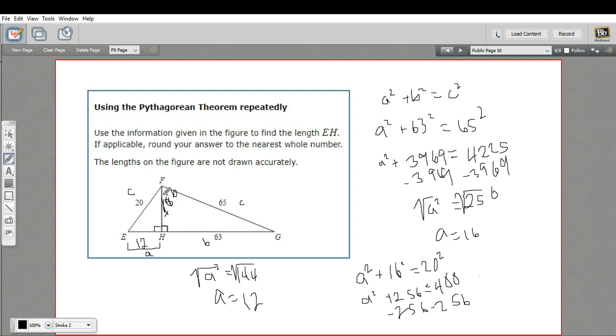You might have, after you found that this side was 16, you might have seen a shortcut, a possible shortcut here. Because if you divide each of the sides by 4, you would get a 5 and a 4 side, and you would know this side would be the 3 side. So 3 times 4 would be 12. Might have been a shortcut that you saw, maybe not.